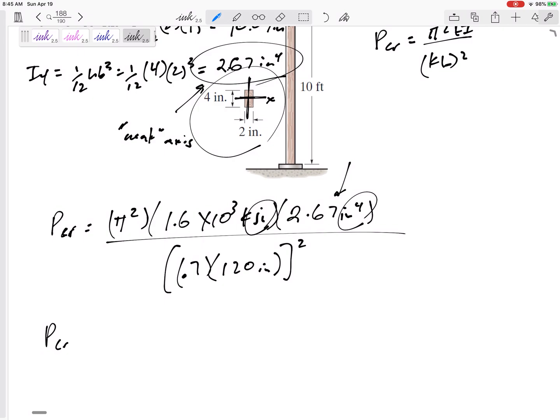So the P critical would be 5.97 Kips. Now that might be the answer. I think this is going to buckle before it crushes, before it yields.